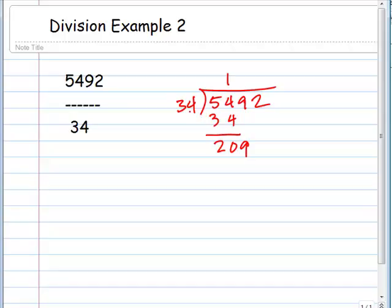Bring down the 9. So 34 goes into 209. Let's see if we go 5 times here. 5 times 4 is 20, carry 2. 5 times 3 is 15, that's 17. 17, that looks close, but I don't know if that would be enough.